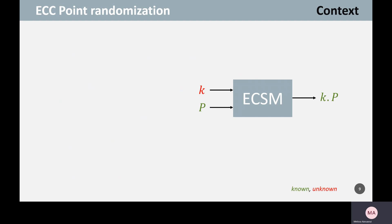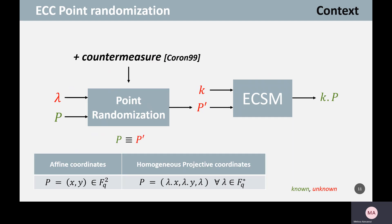We start with a bit of background. The ECSM takes as input a secret scalar K and a possibly public point P, which can be, for example, the elliptic curve base point. With the knowledge of P, DPA-like attacks can be applied on the ECSM—for example, the one presented at CHES 2017 by Poussier. These attacks can be hindered by employing the point randomization countermeasure, which randomizes the input point P into a point P' by using a different elliptic curve representation and a randomly generated secret value lambda. For example, we can move to a homogeneous projective coordinate system from an affine one, so each point (X, Y) can be randomized as (lambda·X, lambda·Y, lambda) as the coordinates.